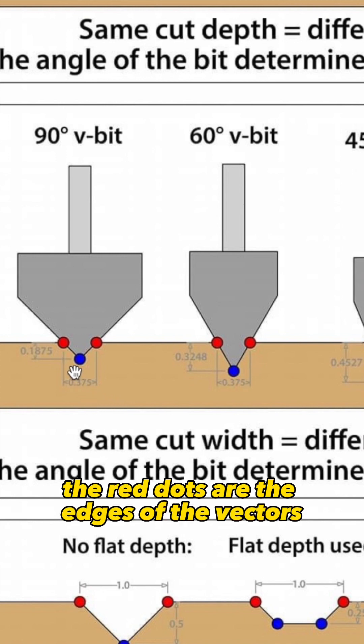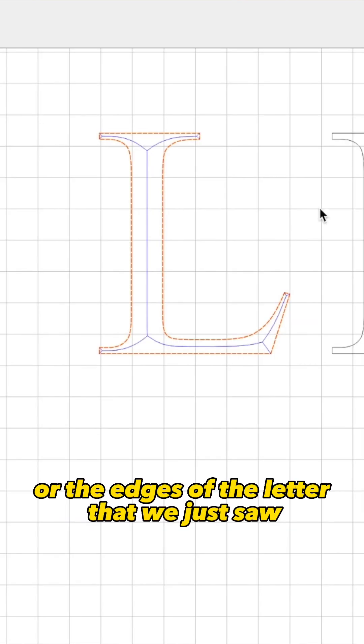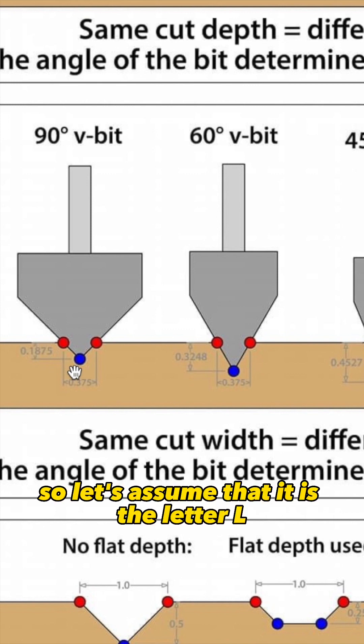Going back to the diagram, the red dots are the edges of the vectors or the edges of the letter that we just saw. So let's assume that it is the letter L, for example.